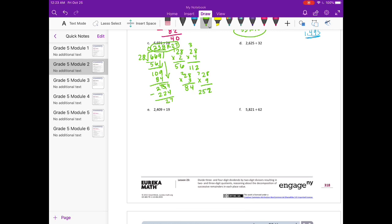And then our check would be 28 times 238 is equal to 6664. And 6664 plus our remainder 27 is 6691. So that works. That matches what we started with up here.